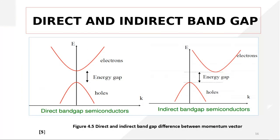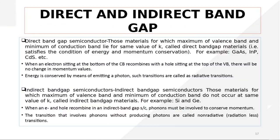Now we talk about direct and indirect band gap semiconductors. There are two types: direct band gap and indirect band gap semiconductors. The graph plotted here is between energy and k, where k is the momentum vector of electrons in the crystal. The red curves show the valence band and the conduction band. Direct band gap semiconductors are those materials for which the maximum of the valence band and the minimum of the conduction band lie at the same value of k.